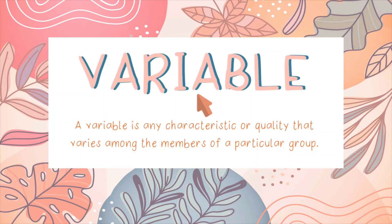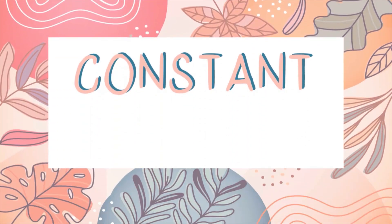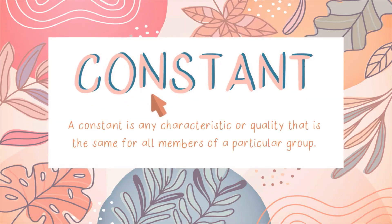If all members of a class are identical, we do not have a variable. We have what we call a constant. Such characteristics are called constants, since the individual members of the class are not allowed to vary but rather are held constant. A constant is any characteristic or quality that is the same for all members of a particular group. In any study, some characteristics will be variables while others will be constants.